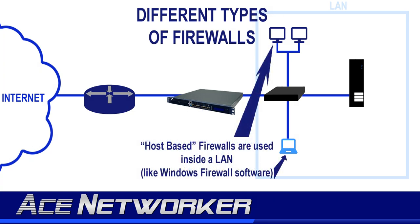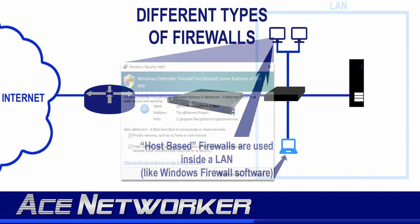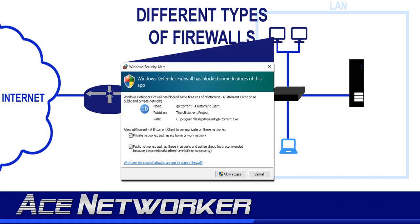However, network-based firewalls are of little use against attacks coming from inside your local area network. This is where host-based or software firewalls are used. Host-based software firewalls are installed on a host to provide firewall services for just that machine. A good example is the Windows firewall found on Windows operating systems. The most often encountered firewall a network admin or technician will deal with is the host-based software firewall.